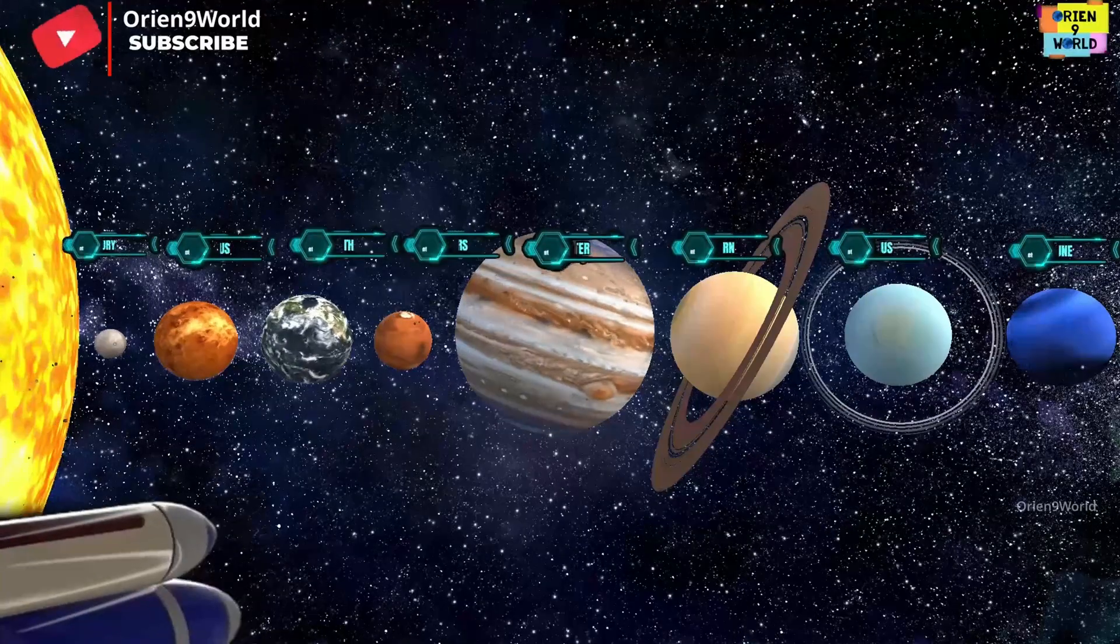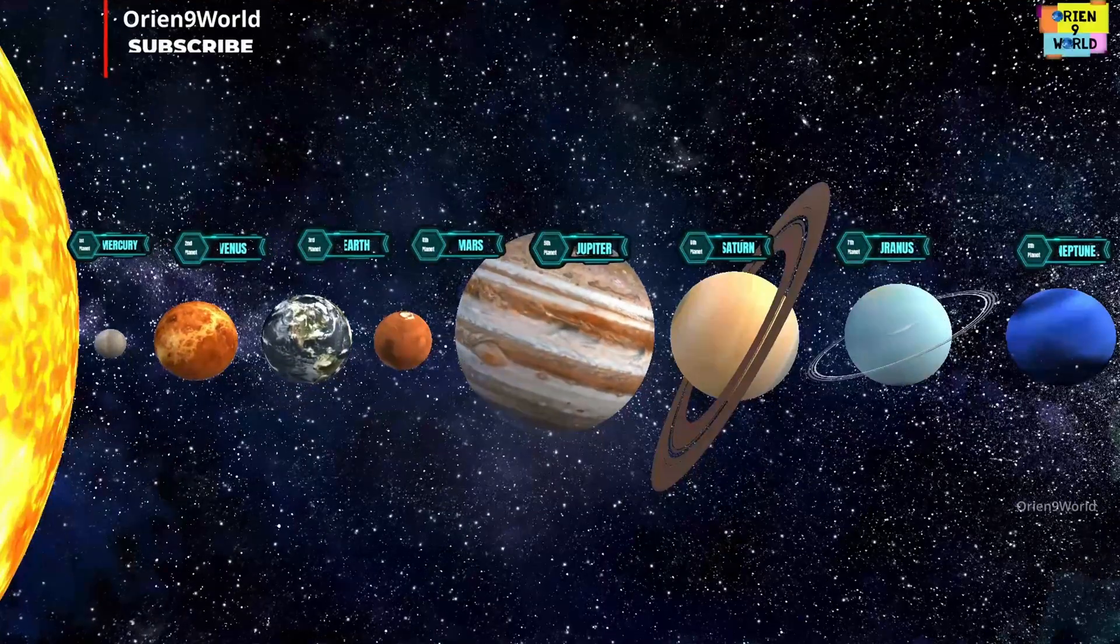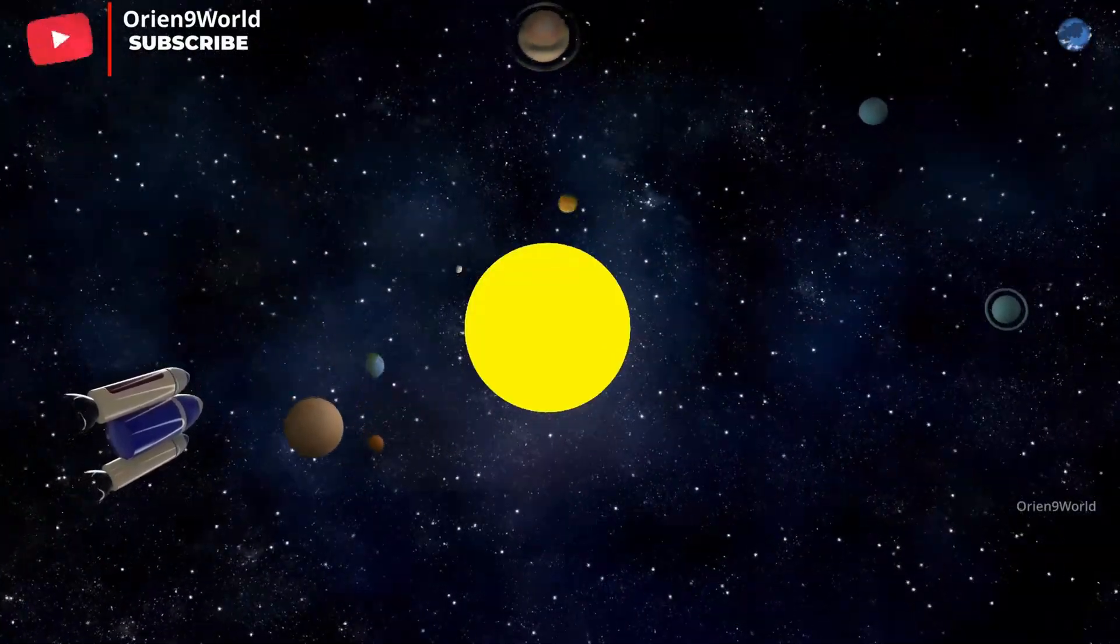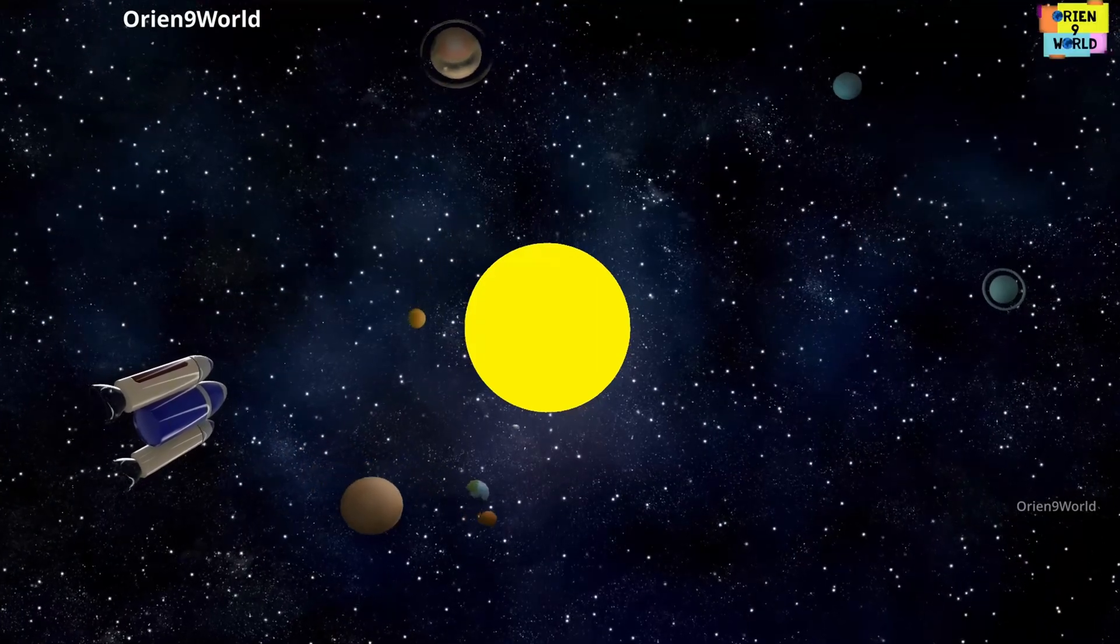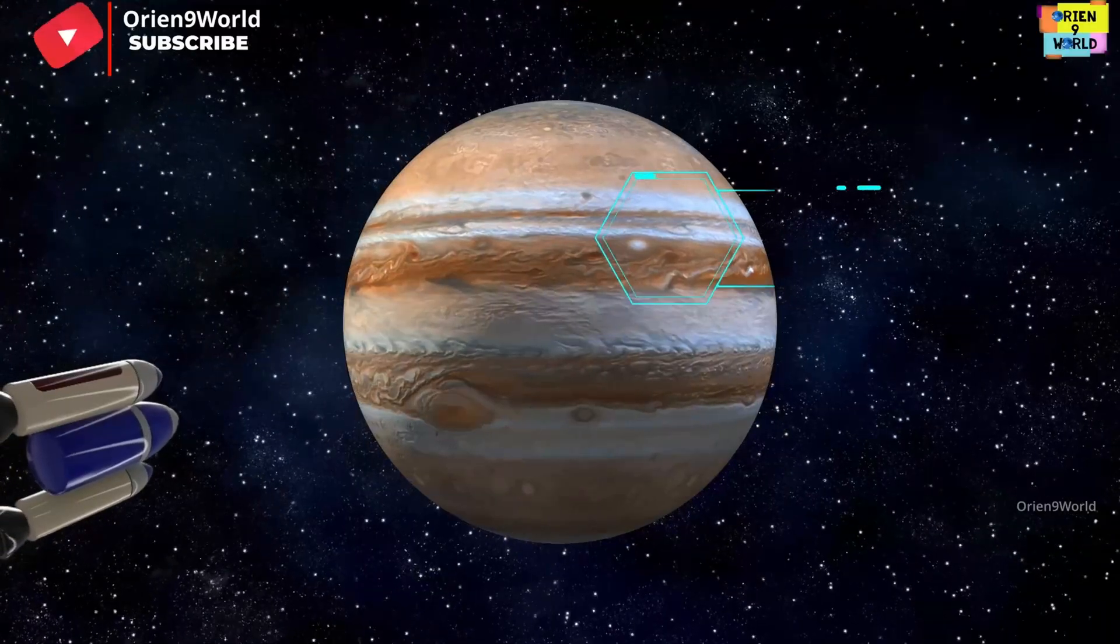There are eight planets in the solar system, we revolve around the sun. Join us to learn about the different planets, now sing along and have some fun.